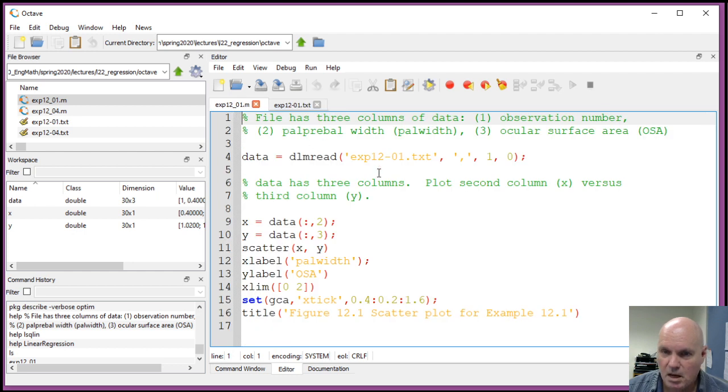We can read the data in using the same DLM read function that we've used in the past. The one here means skip the first row, which contains the labels. So, after this line, data will be actually a matrix that has 30 rows and three columns. We're interested in just the second column, which is our X data, and the third column, which is our Y data. So, lines 9 and 10 here in the script set X equal to the second column, and set Y equal to the third column. And then, to do a scatter plot, it's simply just the one line scatter X comma Y. So, if I run that, it produces this particular graph.